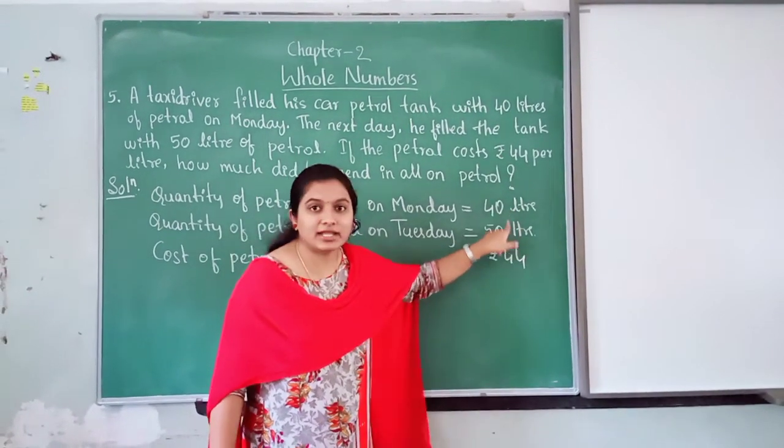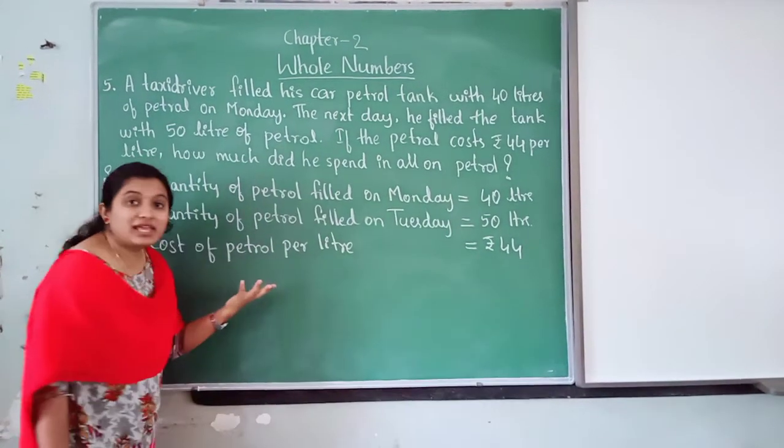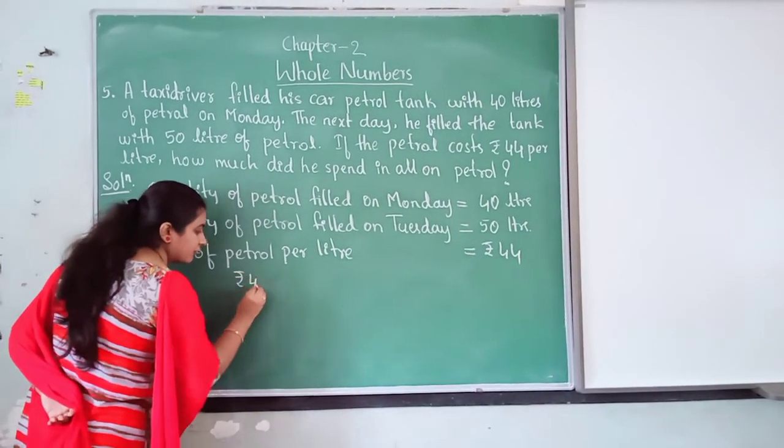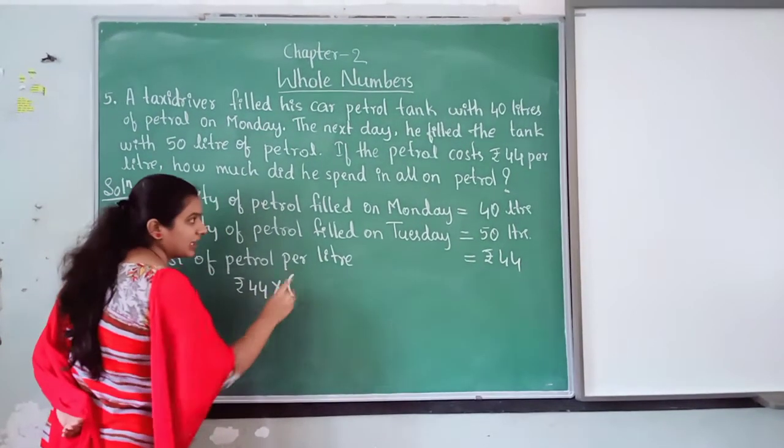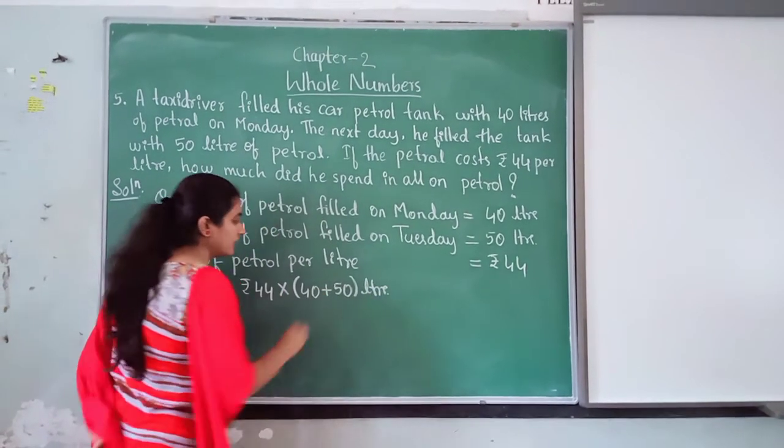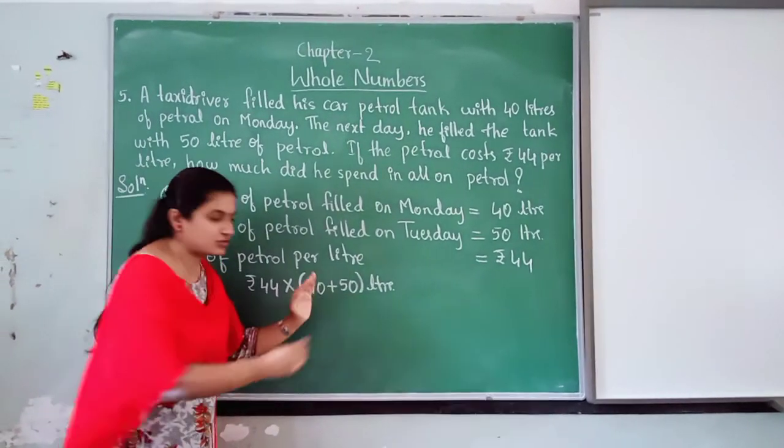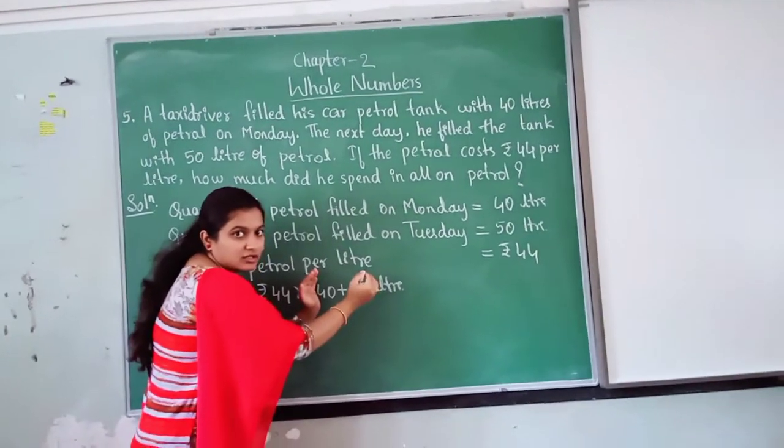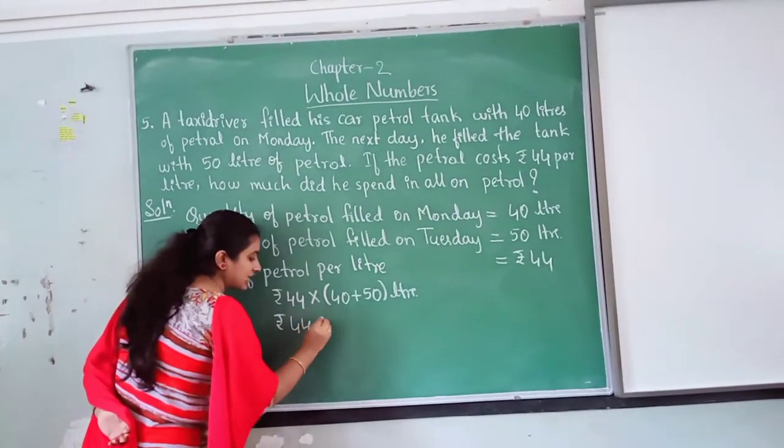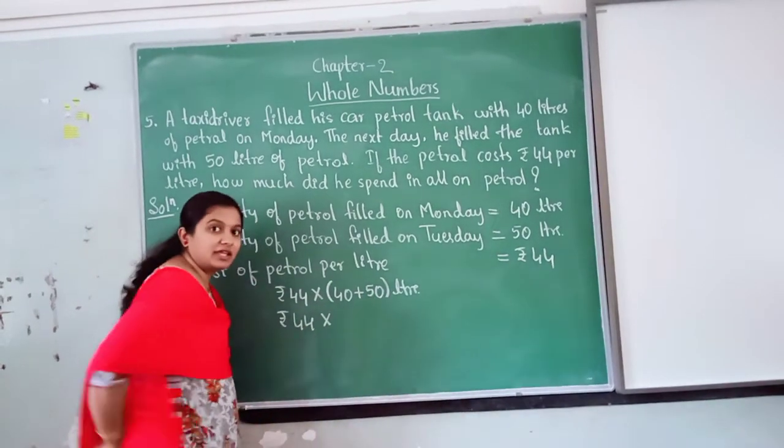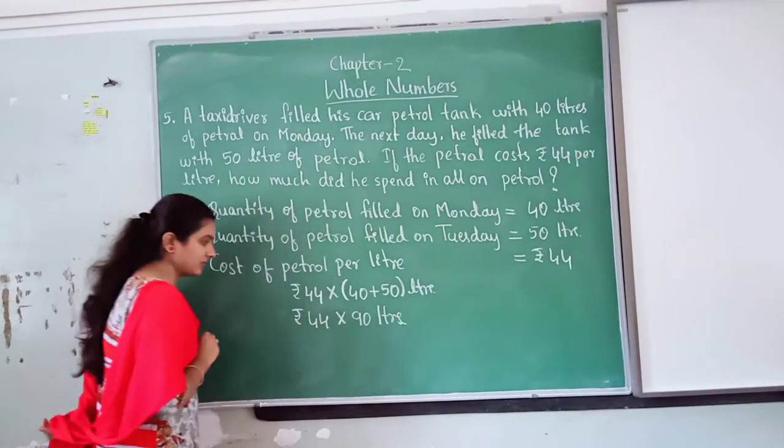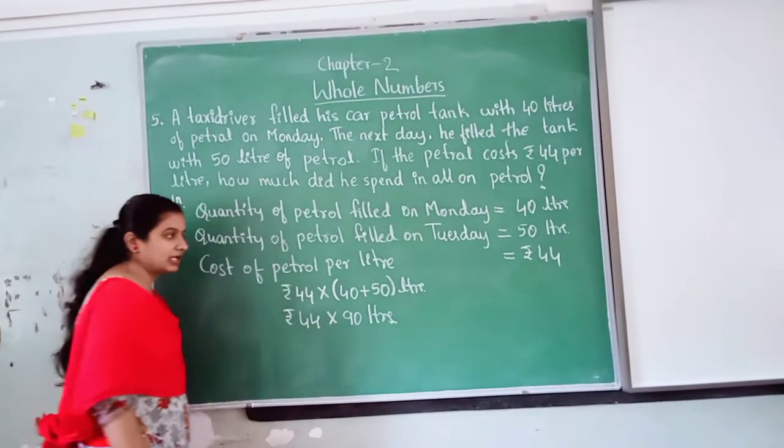These two are same. Litre, litre is there. This one is rupees. So, who will come out now? Rupees will come out. Rupees 44 into, bracket here, 40 plus 50 litres. Why? Because these two are same. Litre, litre. So, I have written in one group. This 44 is outside. Take outside. So, now write, 44 as it is, into 40 plus 50. I have written 90 litres. So, now multiply 44 into 90. So, do rough work here. 44 into 90.